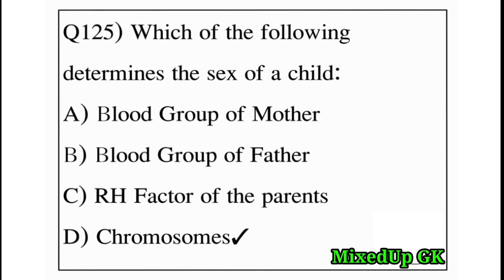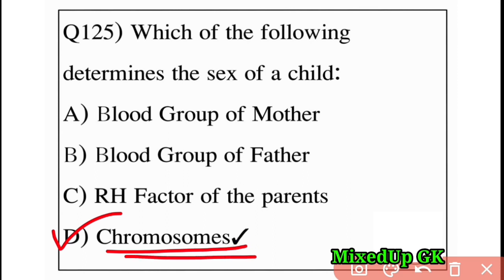Next question: which of the following determines the sex of a child? Option A: blood group of mother, Option B: blood group of father, Option C: RH factor of the parents, Option D: chromosomes. The answer is Option D: chromosomes. Chromosomes determine the sex of a child.